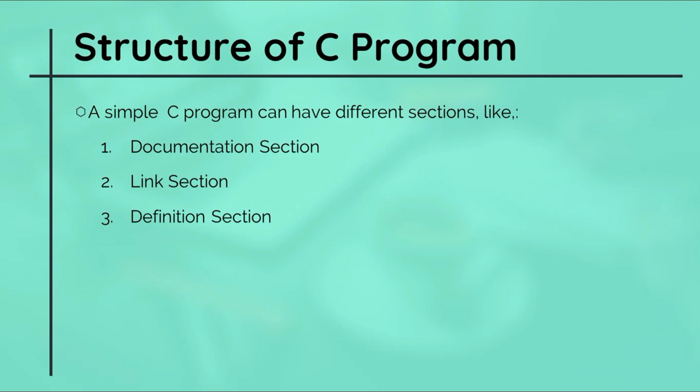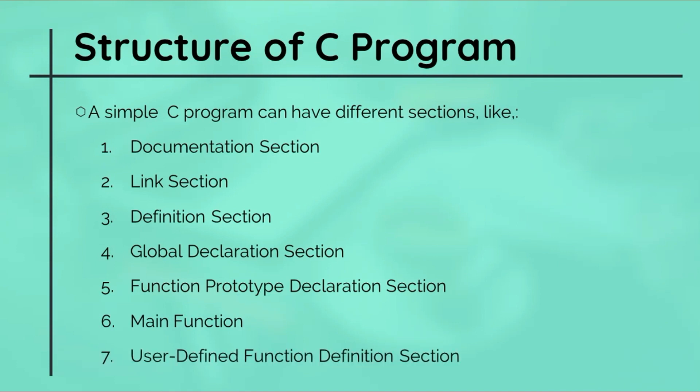A simple C program can have different sections like a documentation section, link section, definition section, global declaration section, function prototype declaration section, main function, and at last user-defined function definition section. While we should not worry about all of them as of now, but it is better to understand a few of them right away.